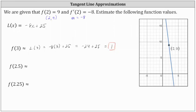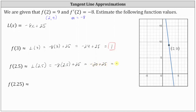f of 2.5 is approximately L of 2.5. Notice that because we found the equation of the tangent line at x equals 2, the closer we get to x equals 2, the better the estimates. So f of 2.5 is approximately L of 2.5, which equals negative 8 times 2.5 plus 25. Negative 8 times 2.5 is negative 20, and negative 20 plus 25 equals positive 5. Our estimate for f of 2.5 is 5.